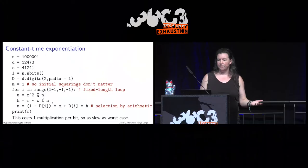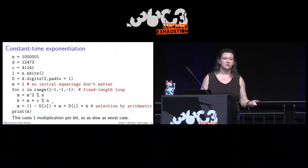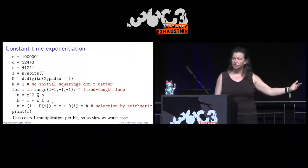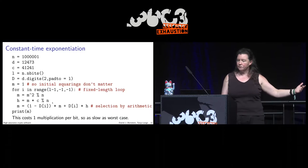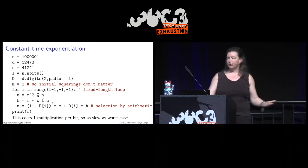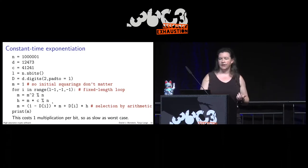We also don't want leakage via cache timing attacks and so on. For this, we sacrifice performance — we do a multiplication for every bit, not only for those that are nonzero.